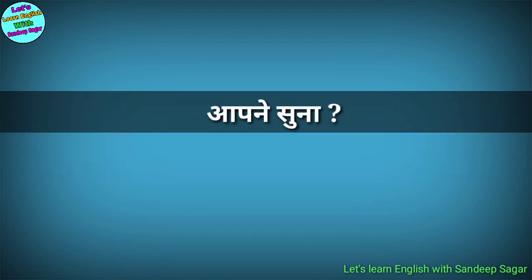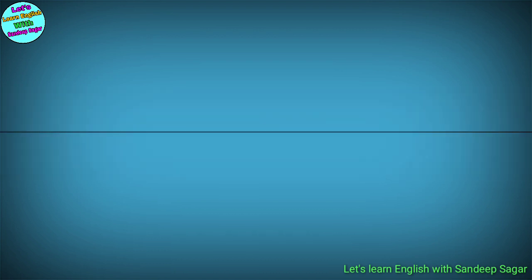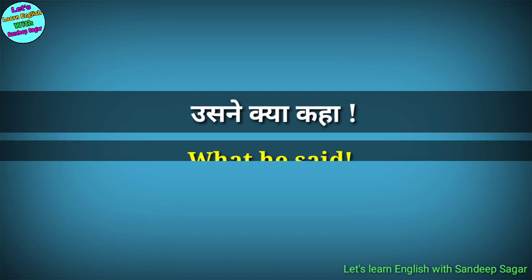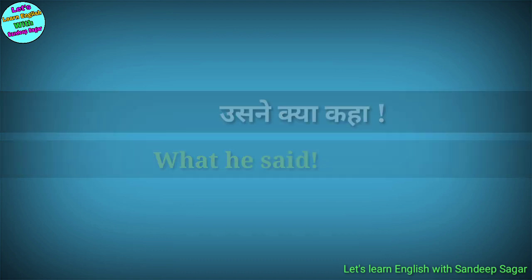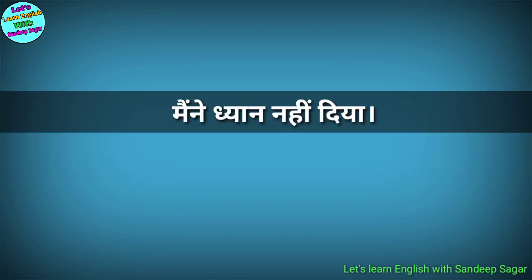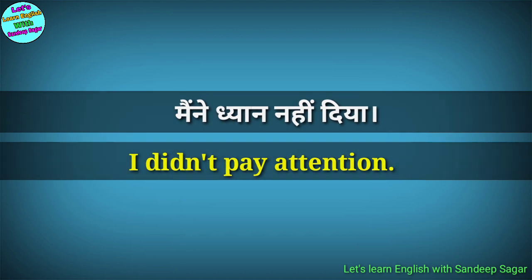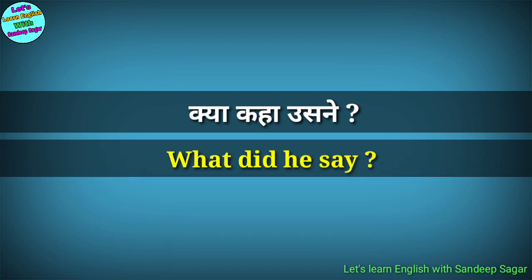Aapne suna — Did you hear? Kai baar aap aise poochte honge. Did you hear? Usne kya kaha — What did he say? Ye dono sentence connected hai guys, toh aap bol sakte hain — What did he say? Maine dhyan nahi diya — I didn't pay attention. Kya kaha usne — What did he say?